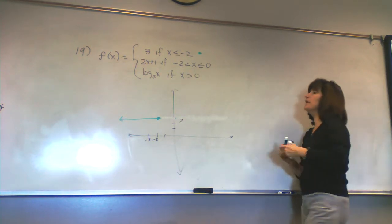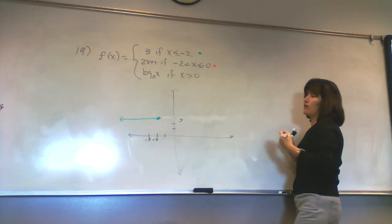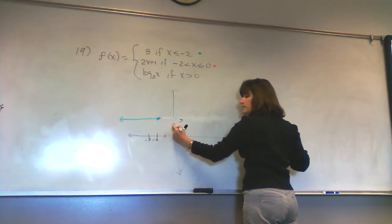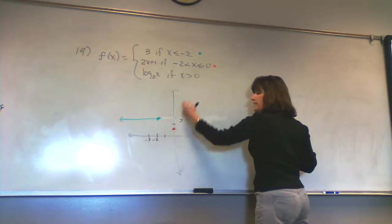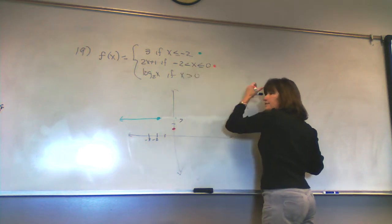And then this part, 2x plus 1, the graph of 2x plus 1 is a line with slope 2 and y-intercept 1, so it looks roughly like this. I only get the piece of it, though, between negative 2 and 0.